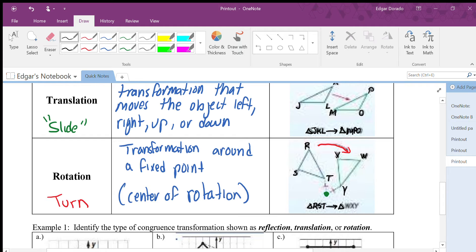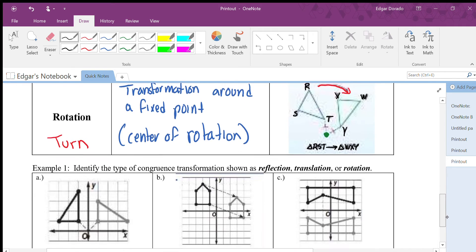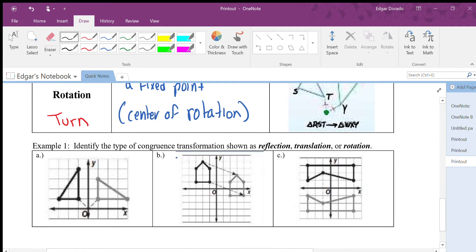All right, let's go ahead and take a look at a few of these and see if we can figure out whether we're being given reflections, translations, or rotations. All right, so it says identify the type of congruence transformation shown as reflection, translation, or rotation. I'm going to actually give you guys a chance. I'm going to have you guys pause the video for a second. Why don't you guys go ahead and take a shot at these to see if you can figure out which one is translation, which is rotation, and which one's reflection. Go ahead and give it a shot.